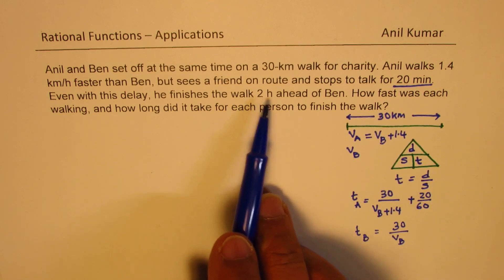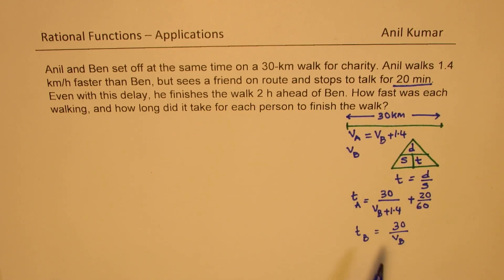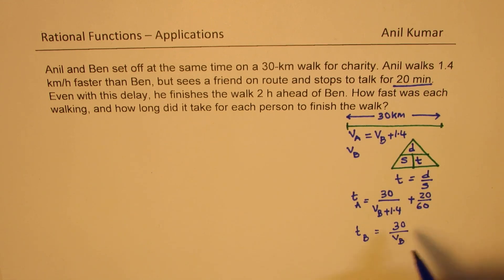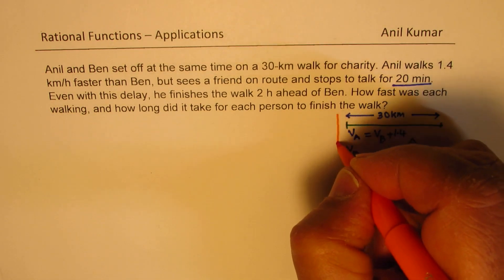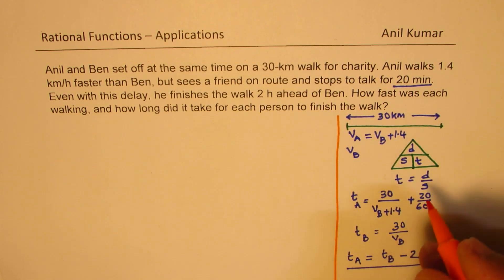And time taken by Ben will be, he walks steadily at pace of VB. So that is the time taken. And we are also given that even with this delay, he finishes the walk two hours ahead of Ben. So that means Ben takes two hours more than Anil. Or you can say this time minus two is Anil's time. So we can say time which Anil takes is time which Ben takes minus two hours. Does it make sense to you? So this is the basic framework for our solution.